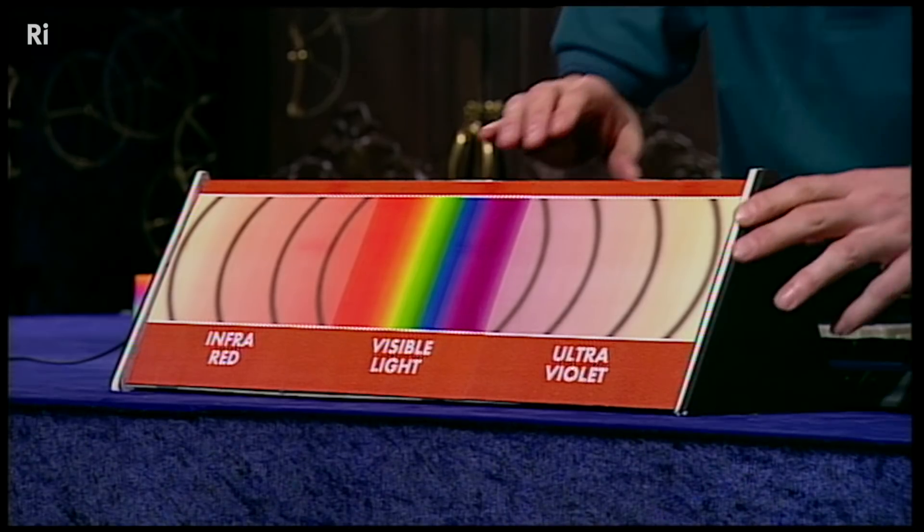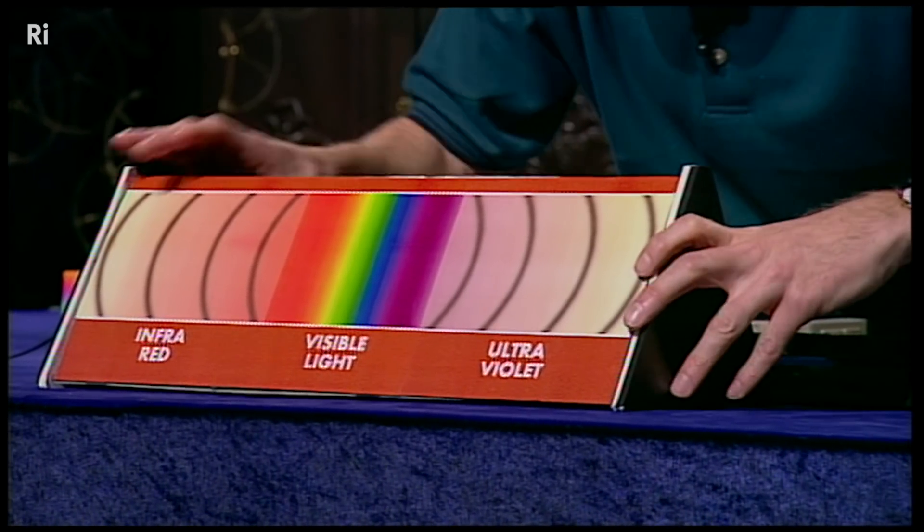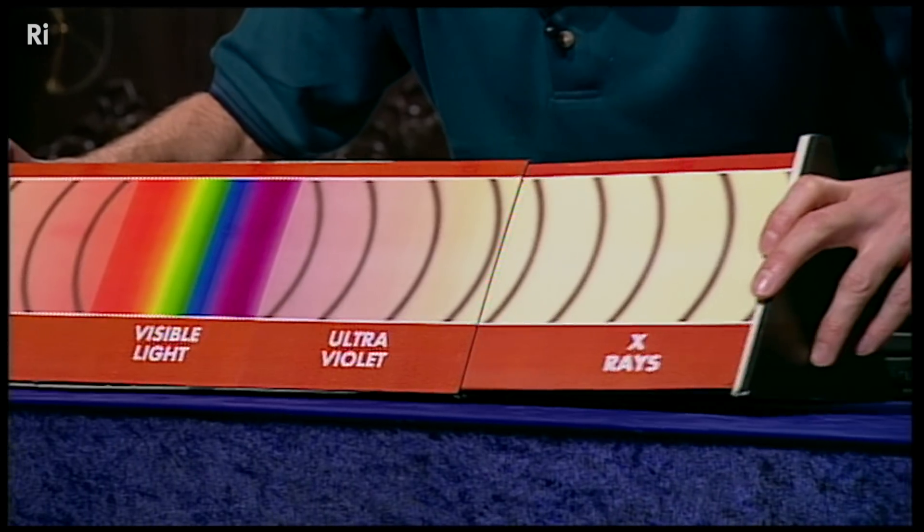As we go up in frequency, we get ultraviolet. That's what makes us go brown, or in my case, red in the sun. And if I go up further in frequency, we see x-rays.